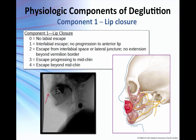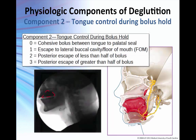Let's talk about these 17 physiologic components that you're going to intimately learn to identify and score. The first one is lip closure, which is assessing the ability for the lips to seal and contain a bolus in the oral cavity. Component number two is tongue control during bolus hold, assessed before the beginning of any tongue movement. You score what you see — can they contain the bolus in the oral cavity?